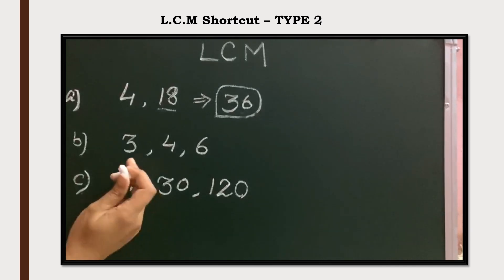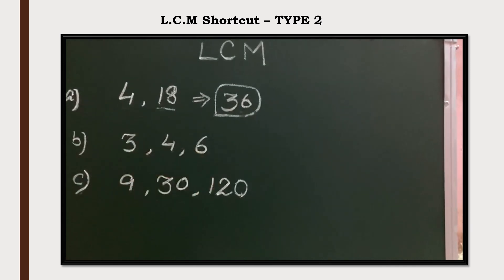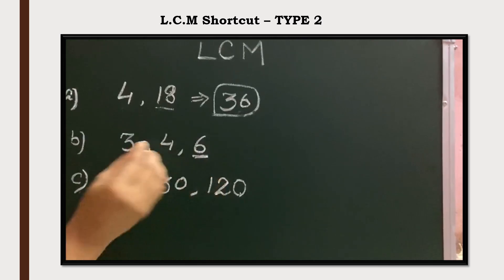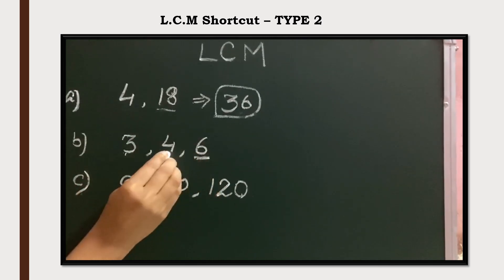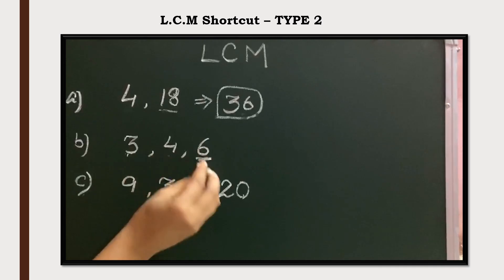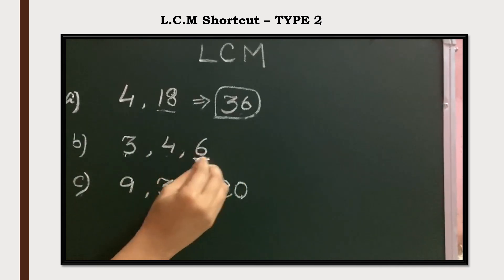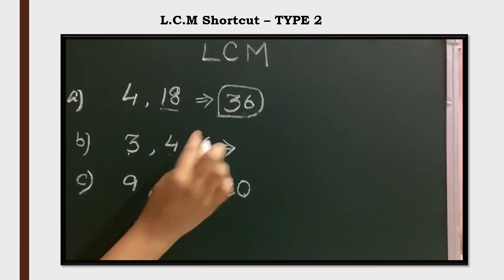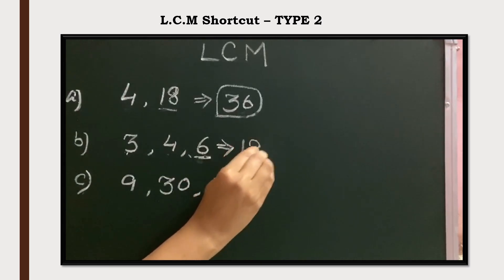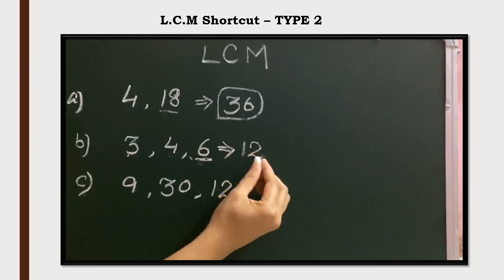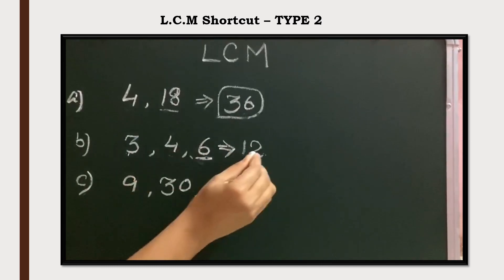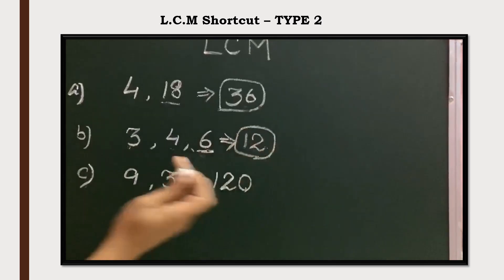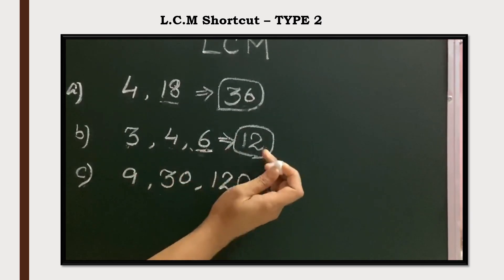Next example: 3, 4, 6. The bigger number 6 is a multiple of 3, but it is not a multiple of 4. In this case, we take the multiples of the bigger number. The next multiple of 6 is 12. 12 is a multiple of 4 and 12 is a multiple of 3. So the LCM of 3, 4, and 6 is 12.